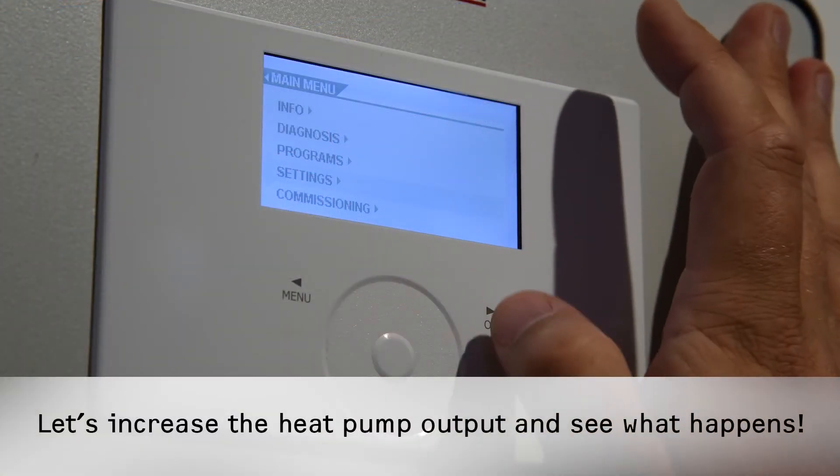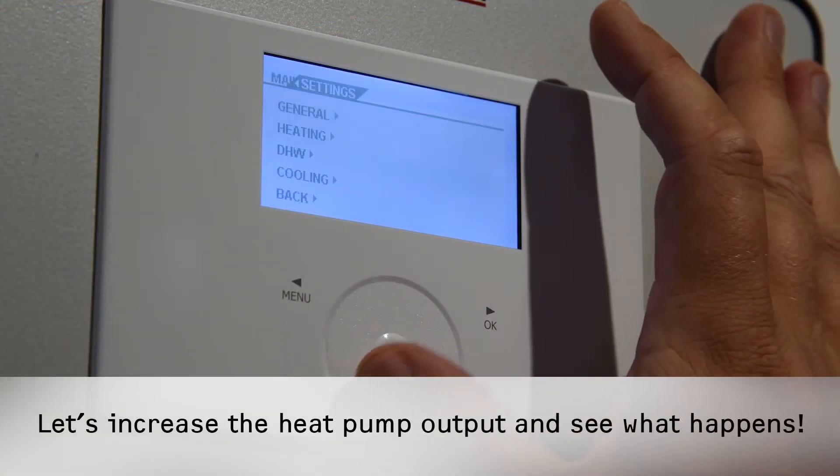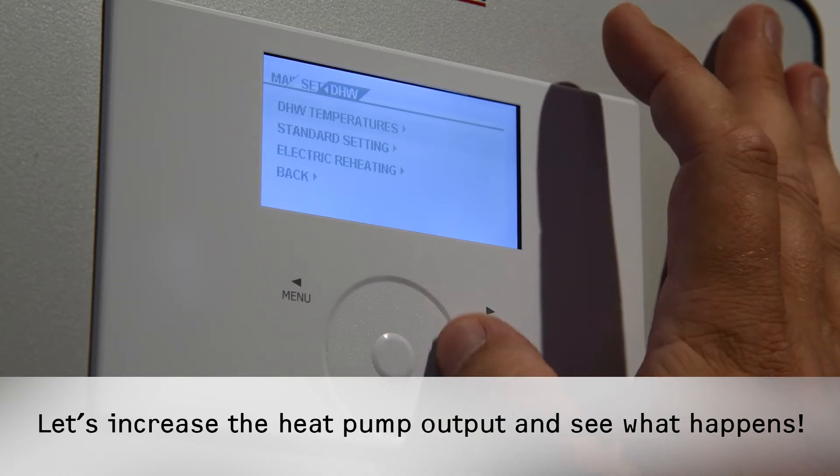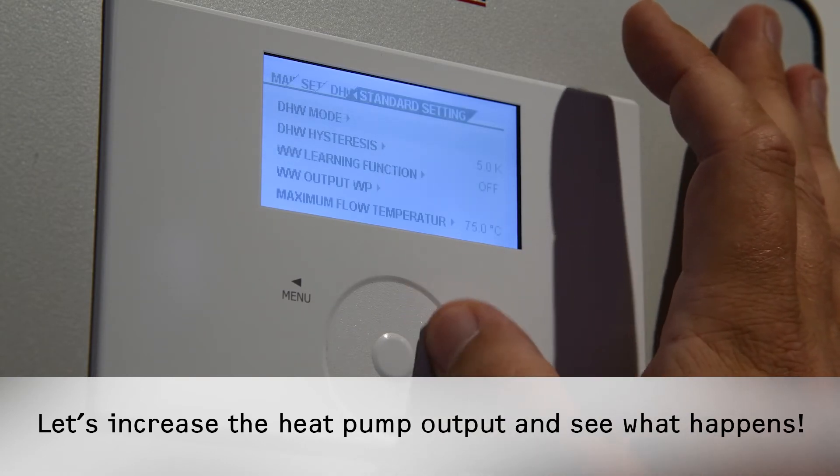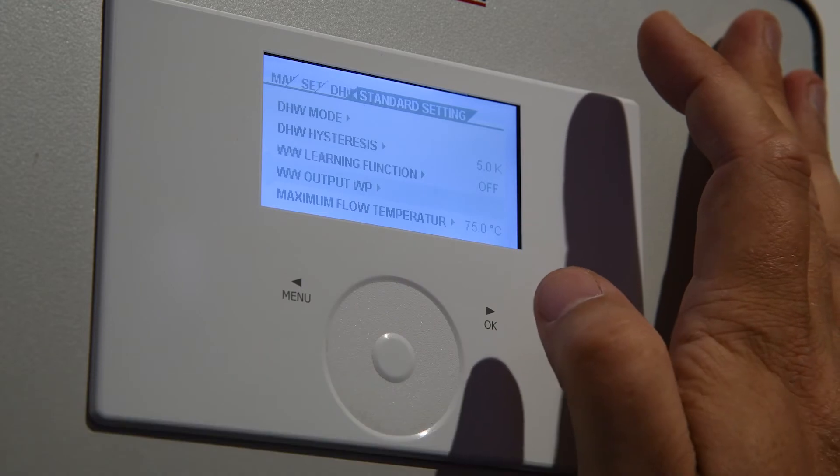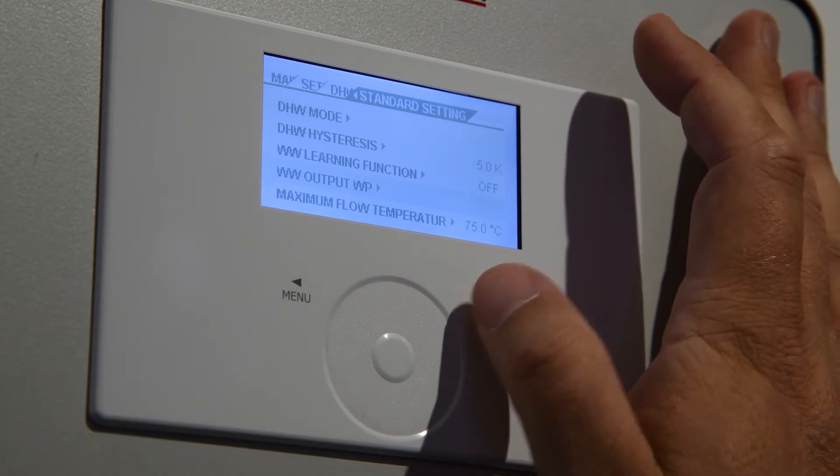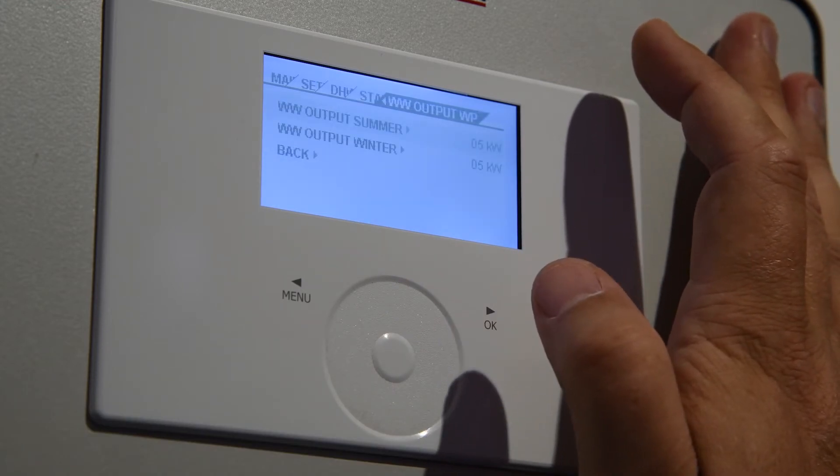Now we go to settings, domestic hot water settings, standard settings, and here we find the domestic hot water output heat pump and the capacity.